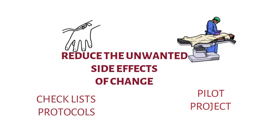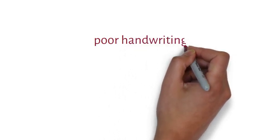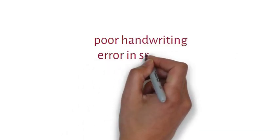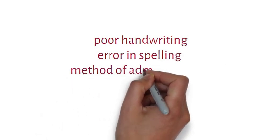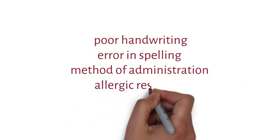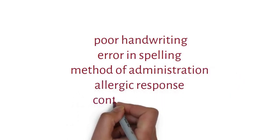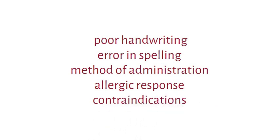Very common reasons leading to medication error are poor handwriting on the prescription pad, errors in writing the spelling of the medication, or the dose and route of administration. In addition, errors will also happen if the prescriber does not check for allergic reactions or contraindications for prescribing the medication. For example, creatinine levels have to be normal before prescribing certain drugs.